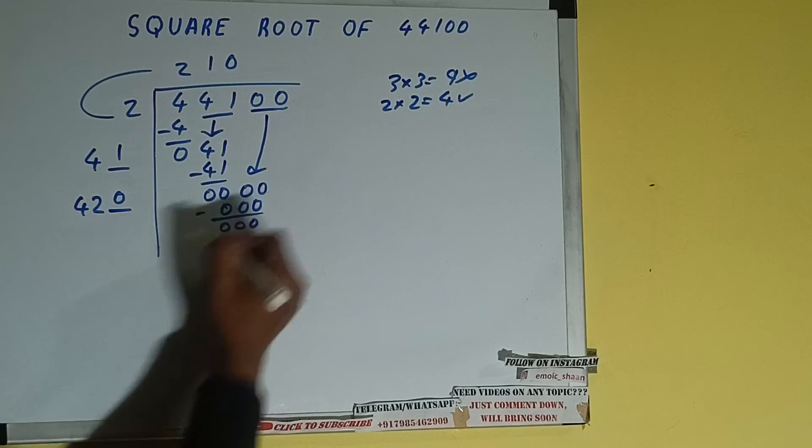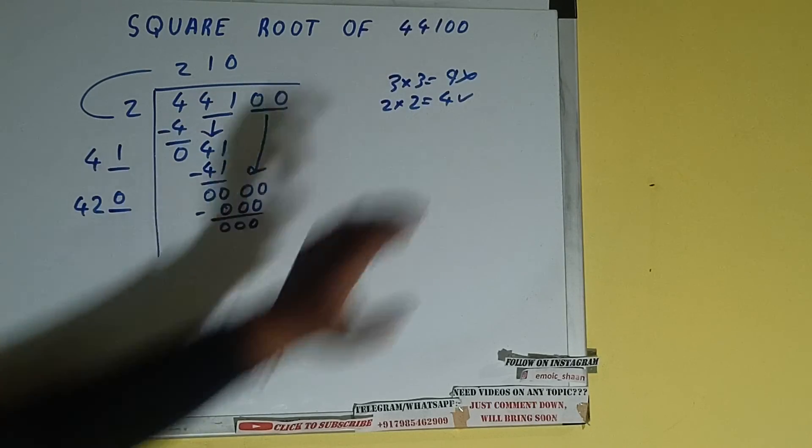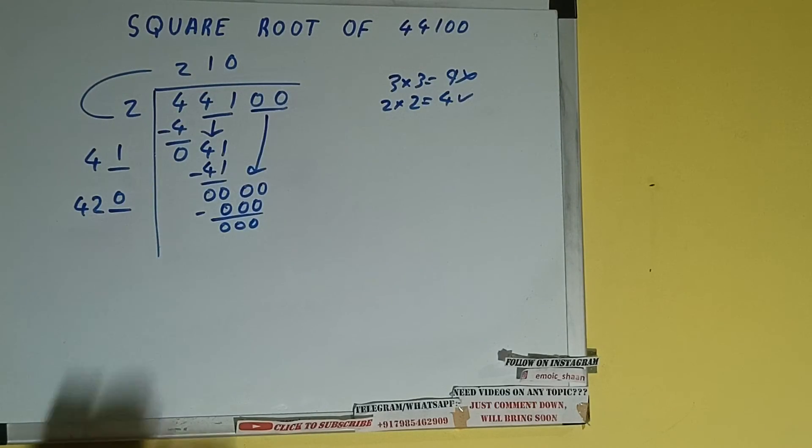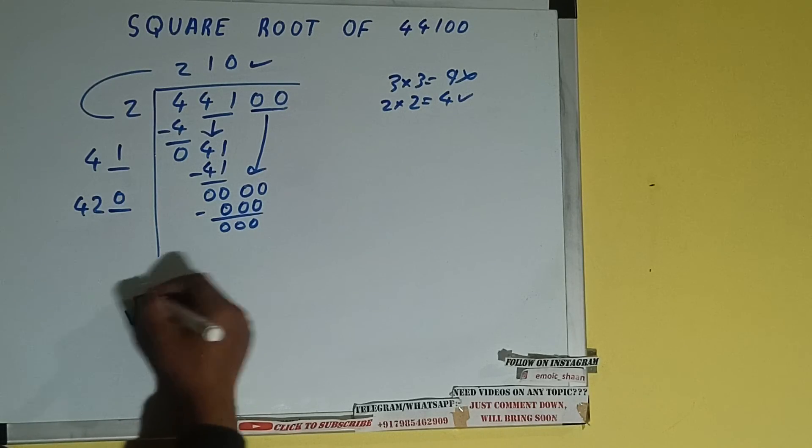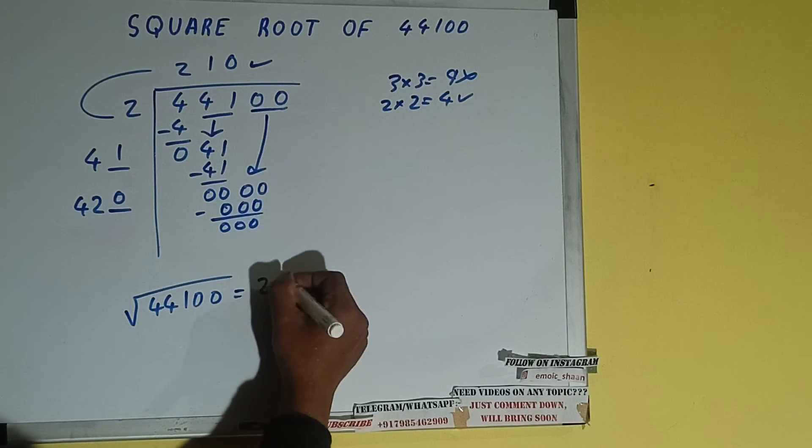Subtract, 0 will be left. Once we finally get 0 after dividing the pair of 0 that was part of the number, we have got the answer in the question that is 210. So square root of 44100 will be 210.